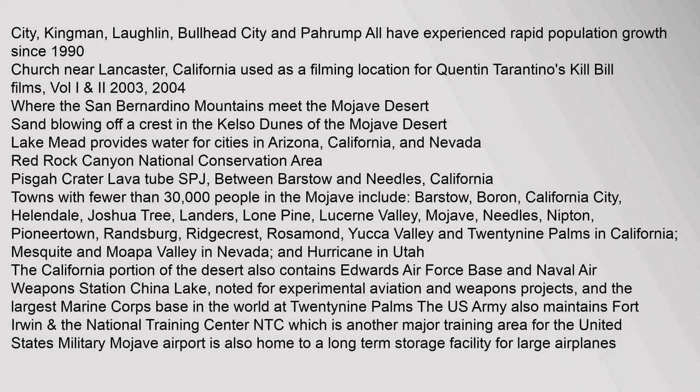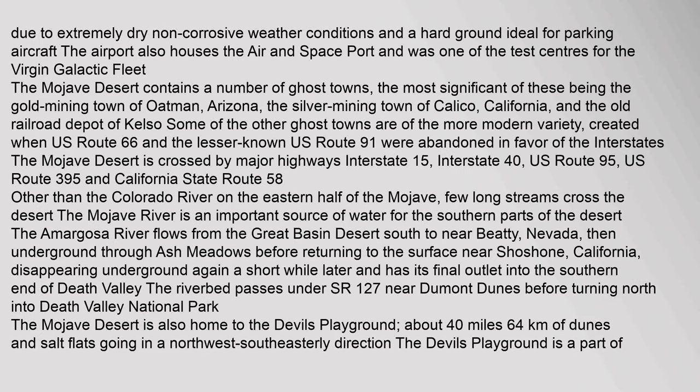A church near Lancaster, California was used as a filming location for Quentin Tarantino's Kill Bill films, Volume 1. Due to extremely dry, non-corrosive weather conditions and hard ground ideal for parking aircraft, the airport also houses the air and space port and was one of the test centers for the Virgin Galactic fleet. The Mojave Desert contains a number of ghost towns, the most significant being the gold mining town of Oatman, Arizona; the silver mining town of Calico, California; and the old railroad depot of Kelso.